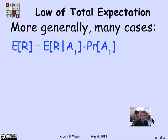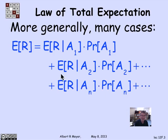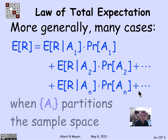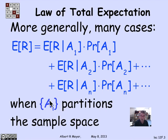It generalizes to many cases. The general form says that I can calculate the expectation of r by breaking it up into the case that a1 holds times the probability of a1, the case that a2 holds times the probability of a2, through an. This could very well — and typically is — an infinite sum where the ai's are a partition of the sample space. So they're all the different cases: either a1 or a2 or a3. They're disjoint and altogether they cover the entire set of possibilities.